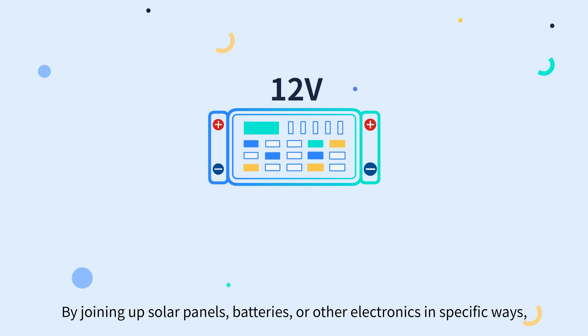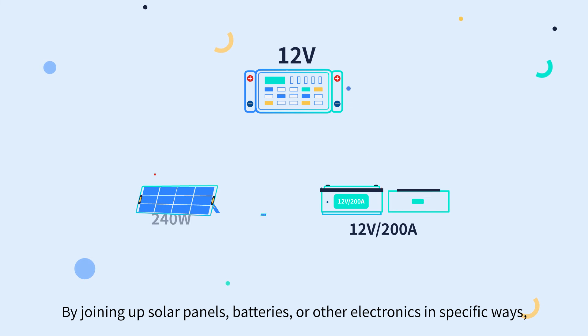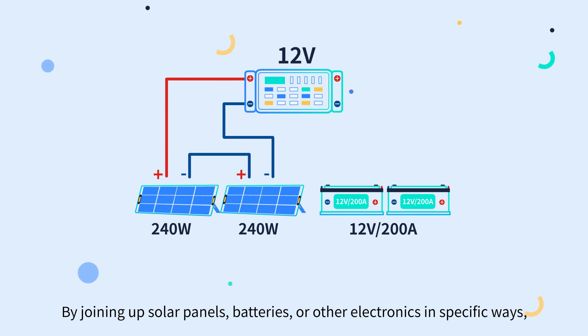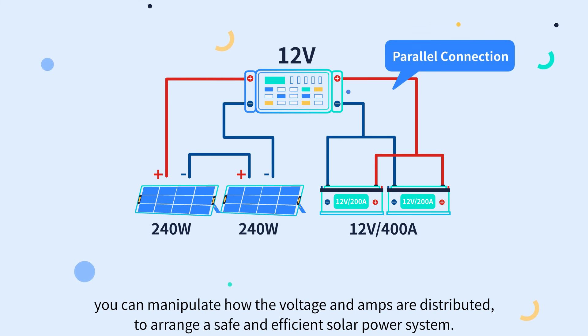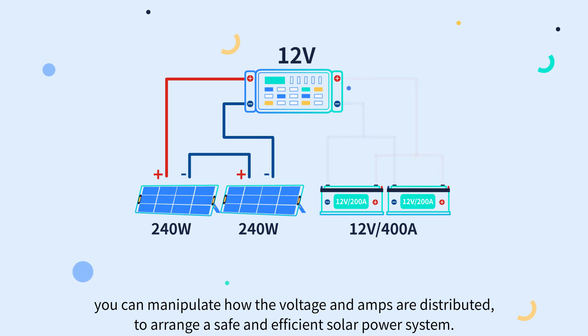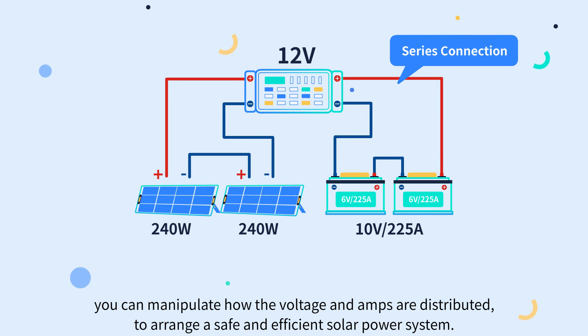By joining up solar panels, batteries, or other electronics in specific ways, you can manipulate how the voltage and amps are distributed to arrange a safe and efficient solar power system.